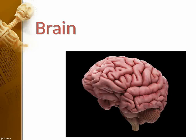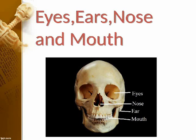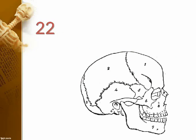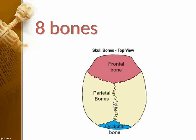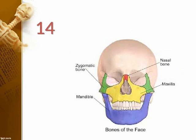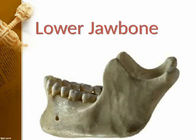The bones of the head make up the skull — the bones of the brain case. How many bones are there in the skull? 22. The upper part of the skull is made up of 8 bones. How many bones are there in the face? 14. The only moving bone in the skull is the lower jaw bone.